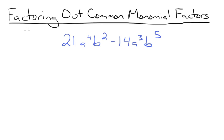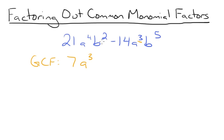The GCF of 21 and 14 is 7. The GCF of a to the 4th and a cubed is a cubed. The GCF of a variable raised to an exponent will always be that variable raised to the lowest exponent in the list — in this case, 3 because 3 is smaller than 4. So we'll have a cubed. And the GCF of b squared and b to the 5th is b squared, because 2 is smaller than 5. Therefore, the GCF between 21a to the 4th b squared and 14a cubed b to the 5th is 7a cubed b squared.